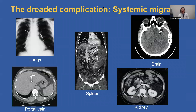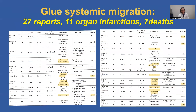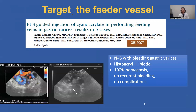The dreaded complication, though, is that this glue can migrate — can embolize. Its intended use is focal or local embolization, but we don't want it to embolize systemically. It can go anywhere in the body. If you have AV shunts, it can get to the brain, for example, and cause a stroke. Those of us who have been performing glue injection for a while have seen these complications. It's underreported, but here is a compilation of 27 reports: 11 organ infarctions and seven deaths from systemic embolization or migration. So we've been thinking about strategies to reduce and ideally eliminate this risk.